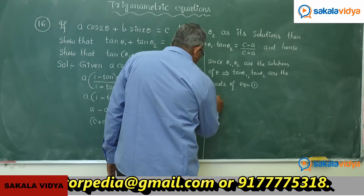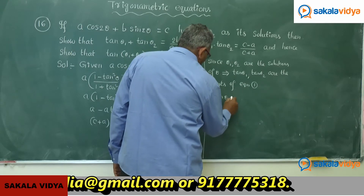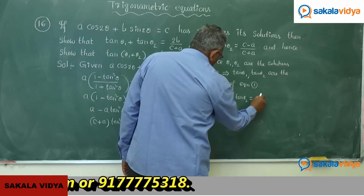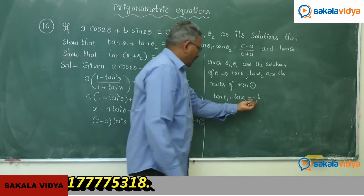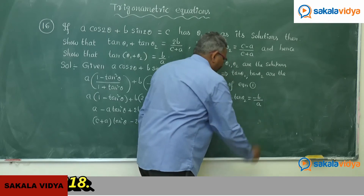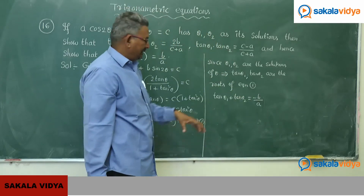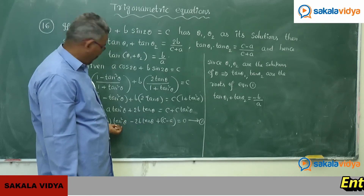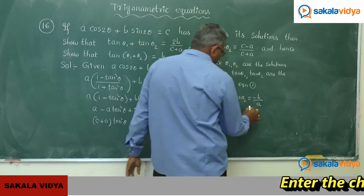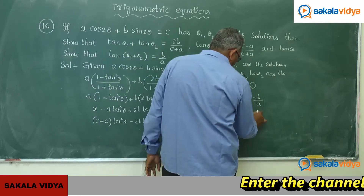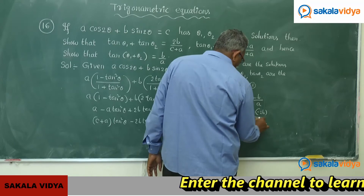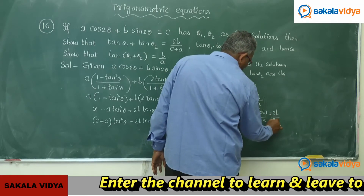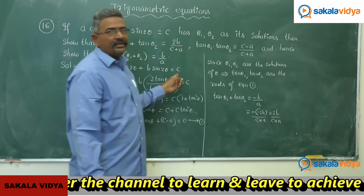So we can find: tan θ₁ + tan θ₂ = sum of roots = −b/a (in general form). Here the coefficient of tan θ is −2b and the coefficient of tan²θ is (c+a). So the sum of roots = −(−2b)/(c+a) = 2b/(c+a). This has been proved.